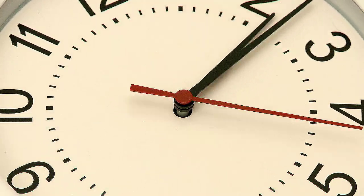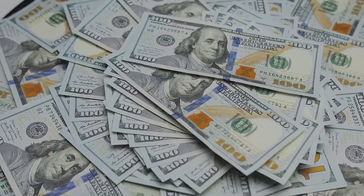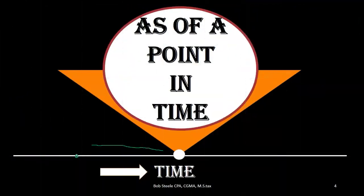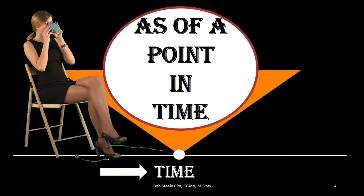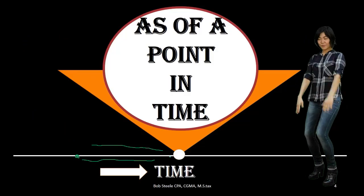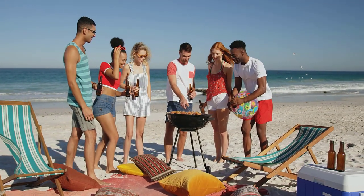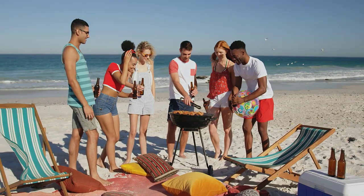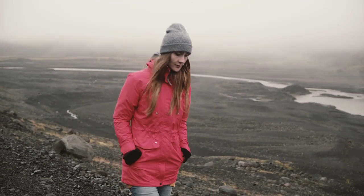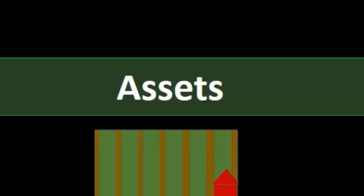On the timeline, the balance sheet will be as of a point in time, while the income statement will cover a range — telling the story of how we got from one point in time to another. The components of the balance sheet are the same as the accounting equation: assets, liabilities, and equity.